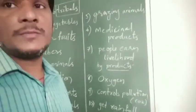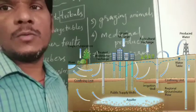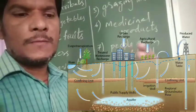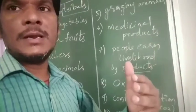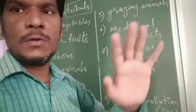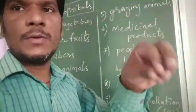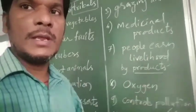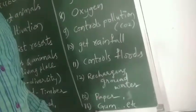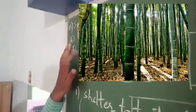Recharging groundwater is possible through forests. When the speed of floodwater is slowed down by the forest, water slowly percolates underground and groundwater levels increase. We also get paper from forests, along with other products like gum, resin, bamboo, and bamboo oils.